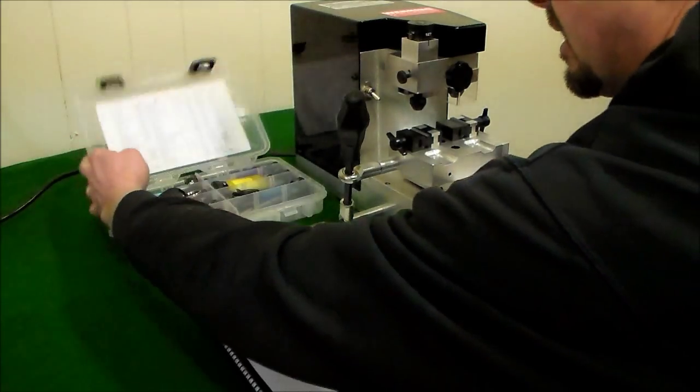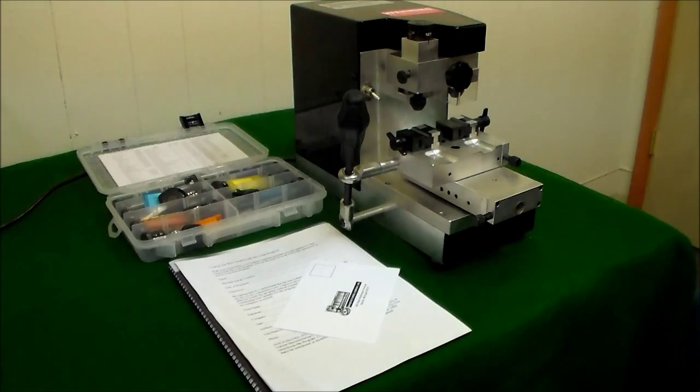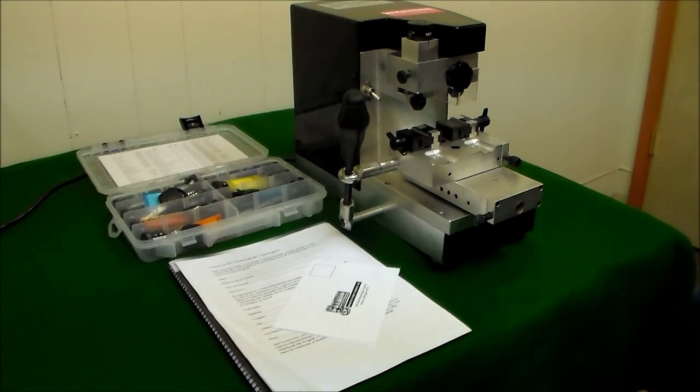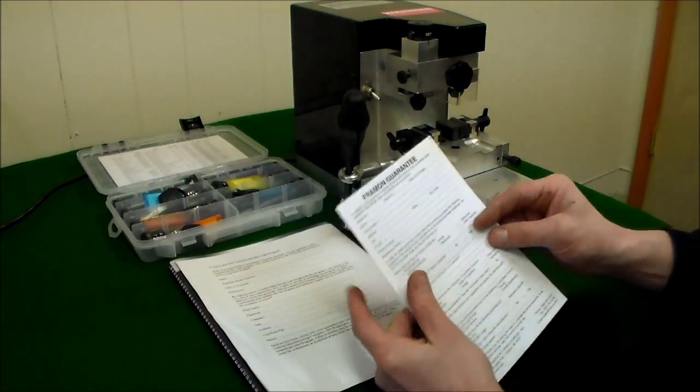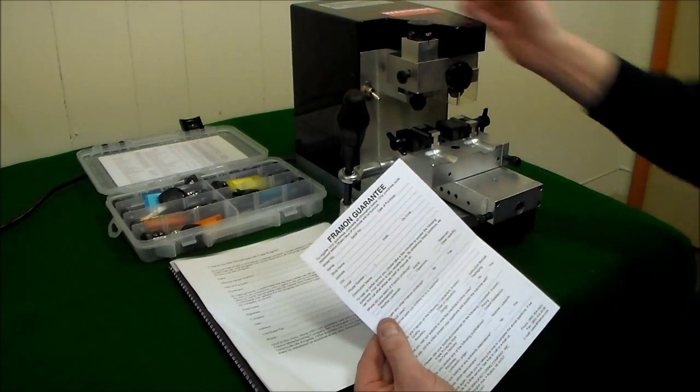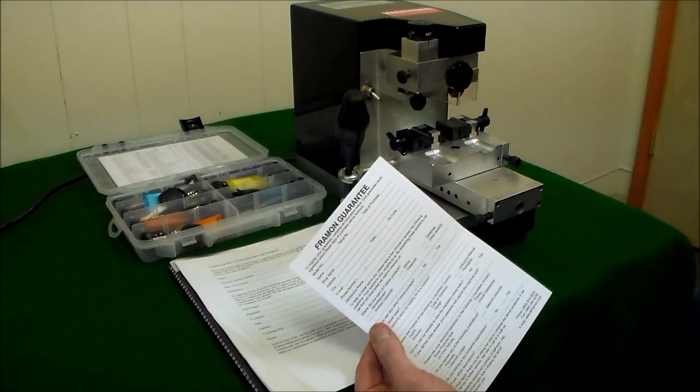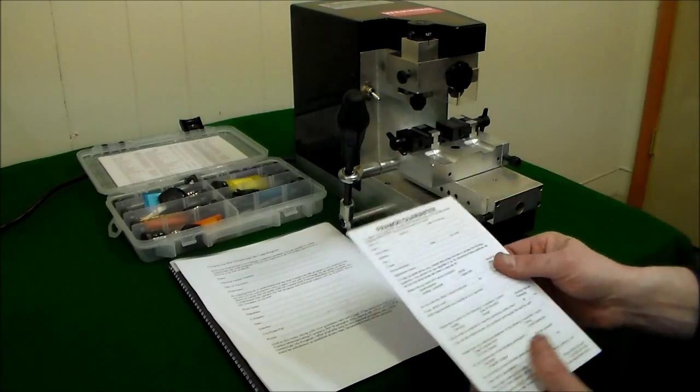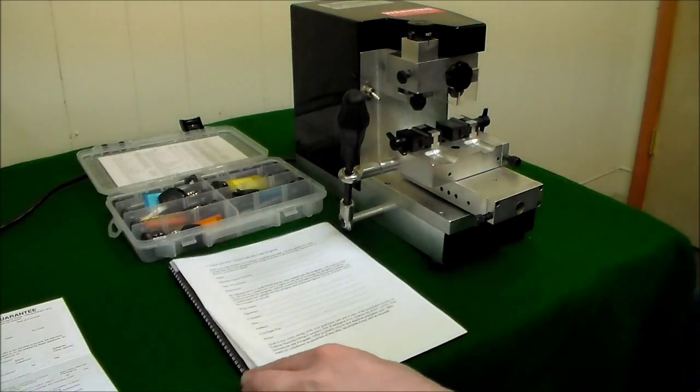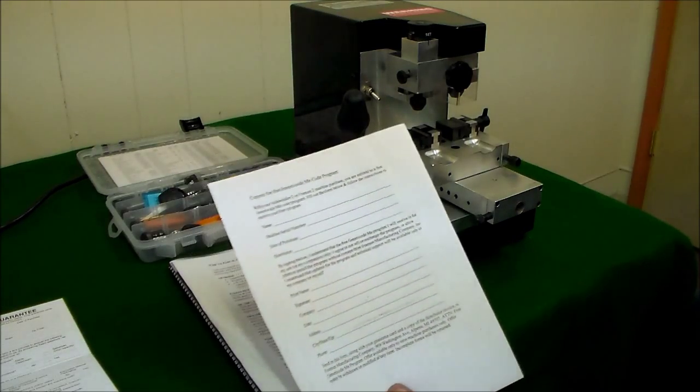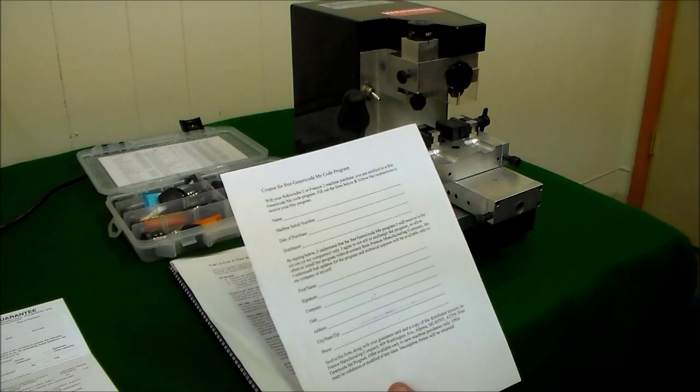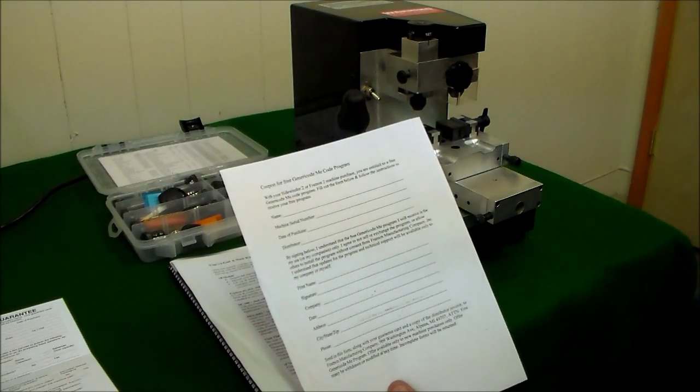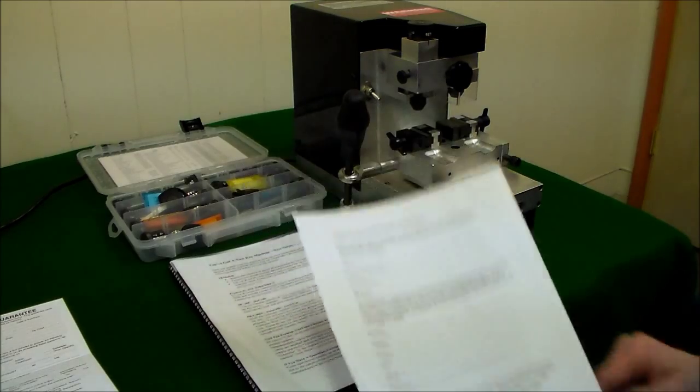Along with the machine, you would have gotten a kit that's got all of your depth and space rod sets in it as well as setup keys. Also would have gotten a guarantee card. Make sure you fill that out. Include the machine serial number, which is over here on the right side of the machine. Include your date of purchase and all the other information to get you registered properly. When you send that in, be sure to send in your registration paperwork for your free generic code program. We will send you a download link once we get that for the full version of our generic code program.